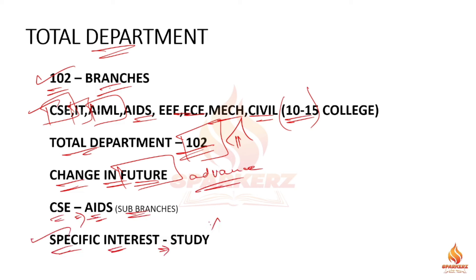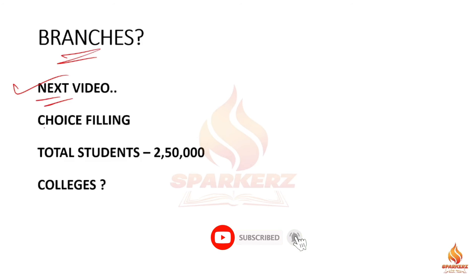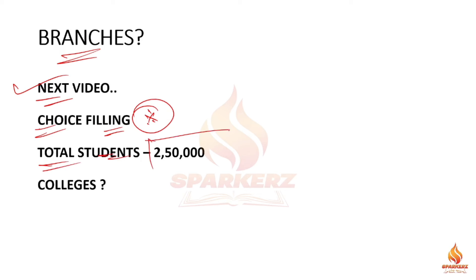That's why you can see the branches because there are 2 branches. If you have an application, there are around 25 lakh applications that you have to expect. If you have an application for 25 lakh students, you can choose different colleges.